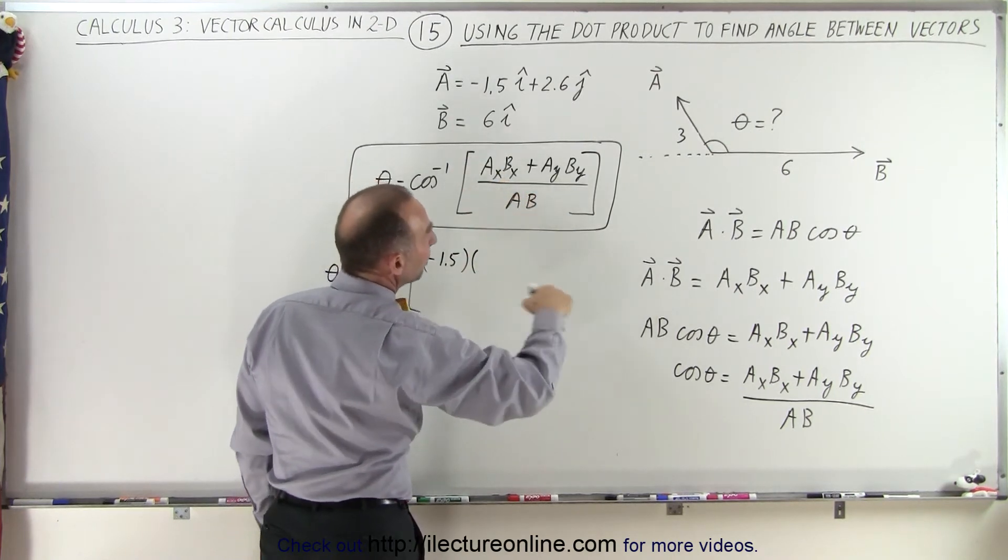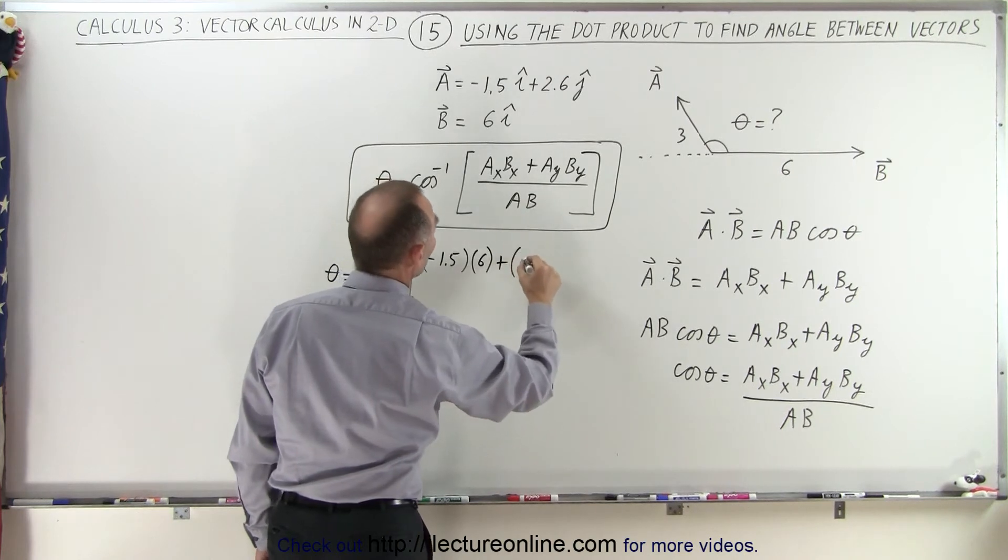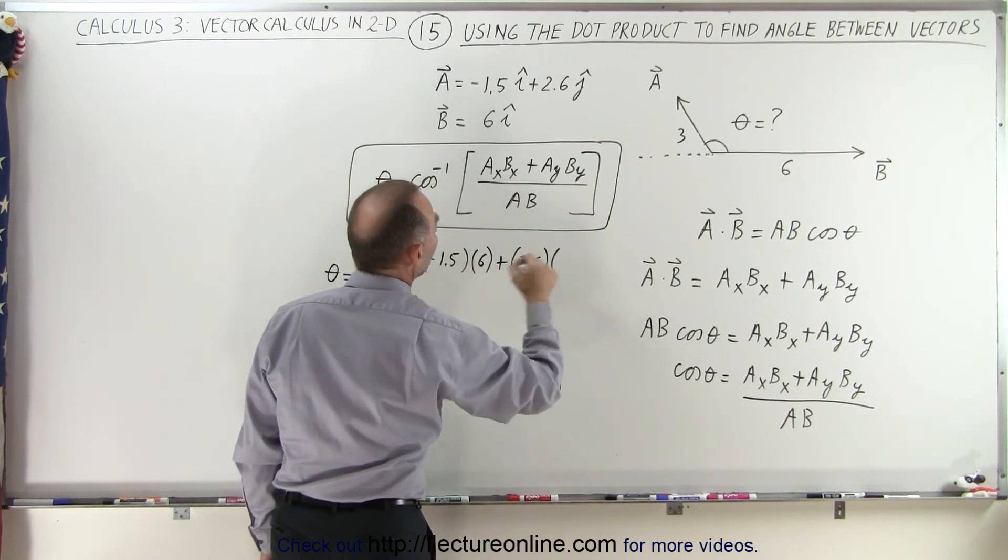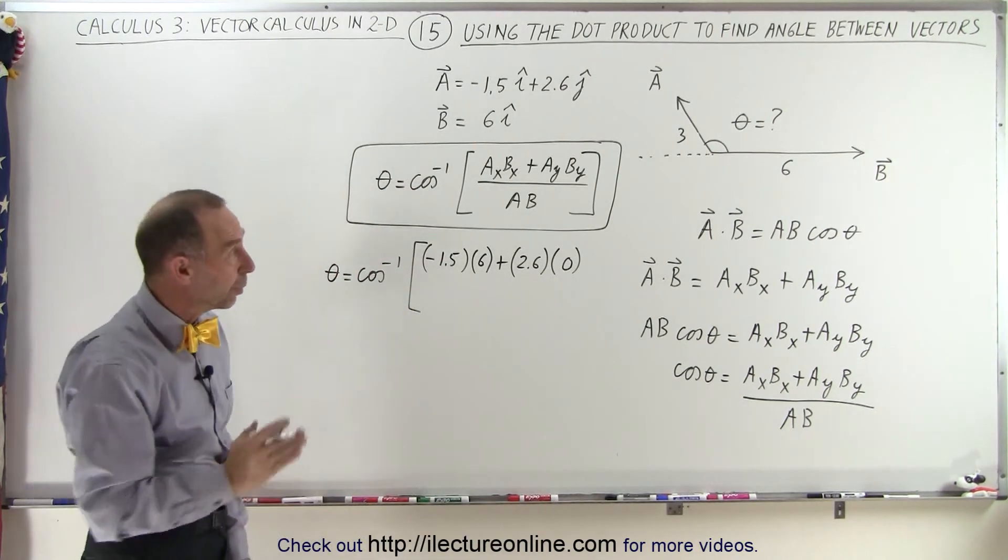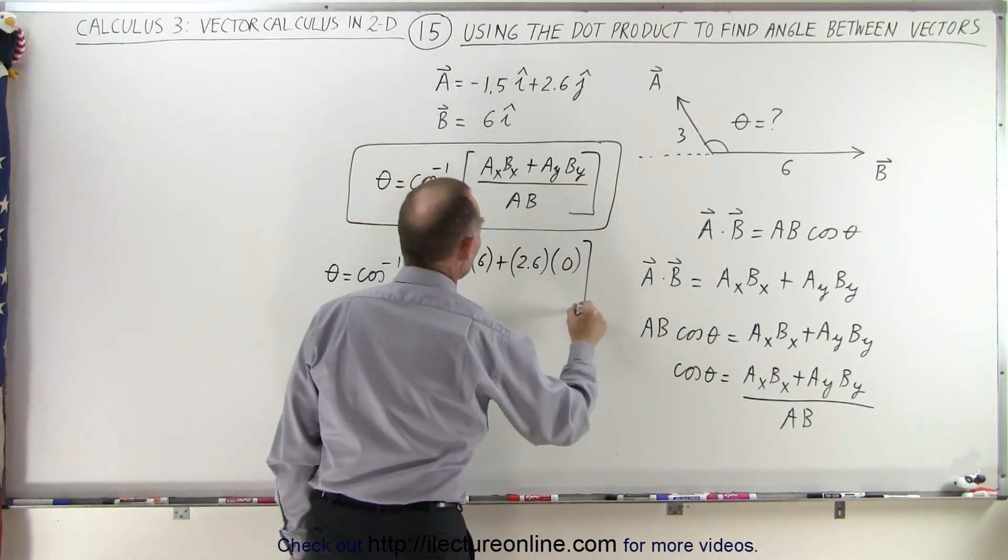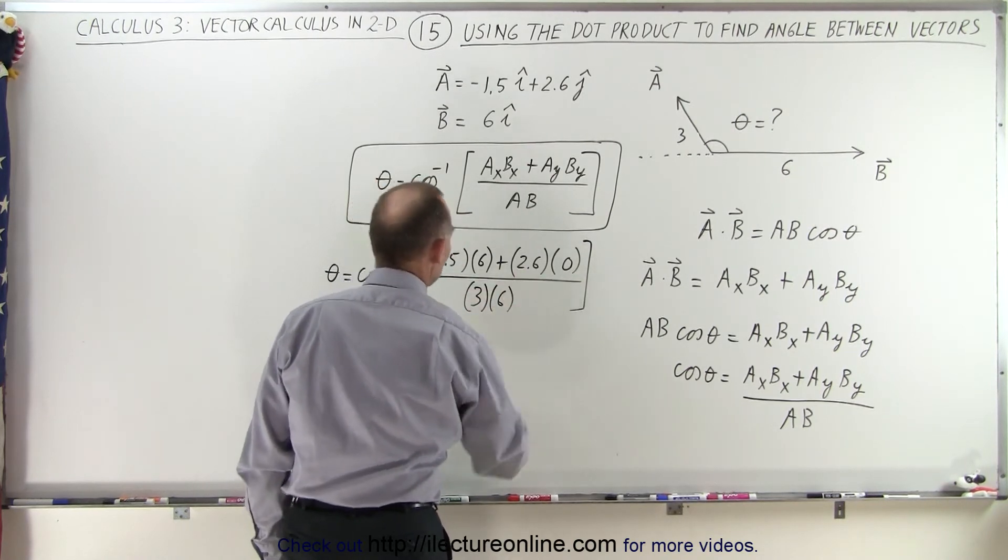that would be B_x, and B_x would be positive 6 plus A_y, which is a positive 2.6, and B_y, which is a 0, because it has no components pointing in the Y direction, divided by the magnitude of A, which is 3, and the magnitude of B, which is 6.